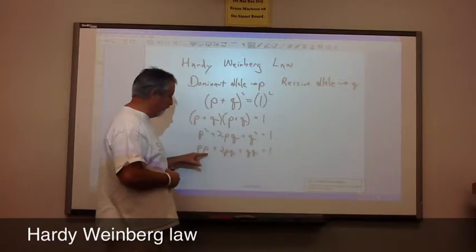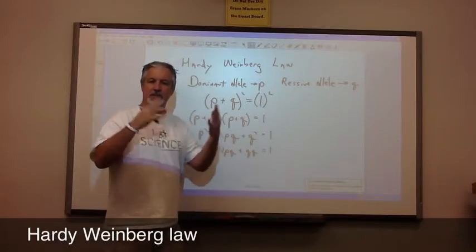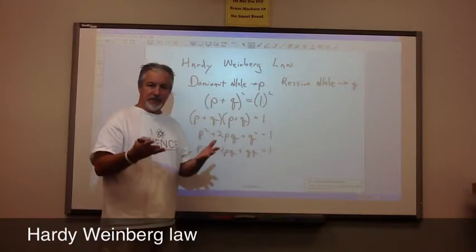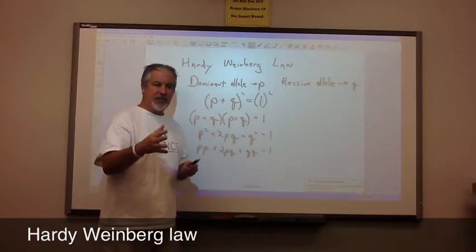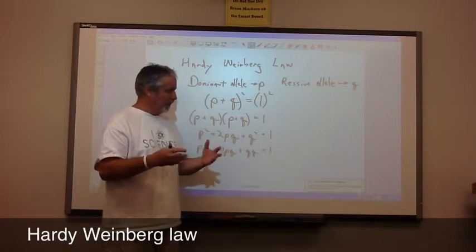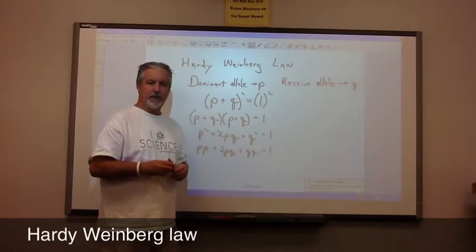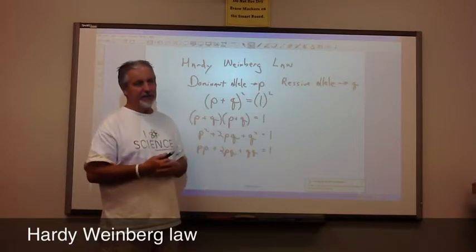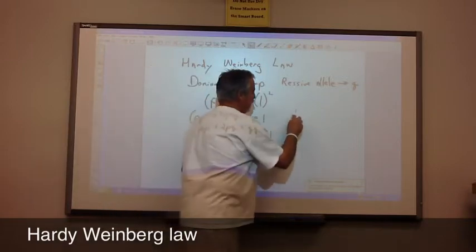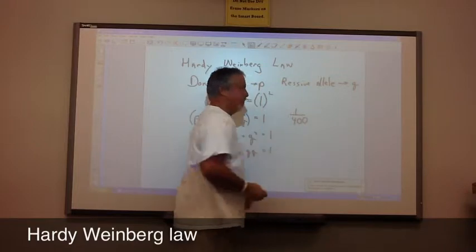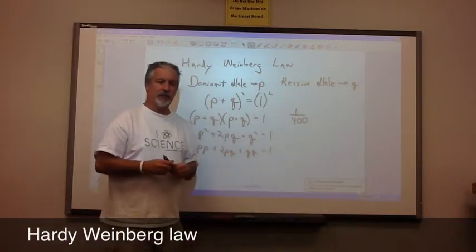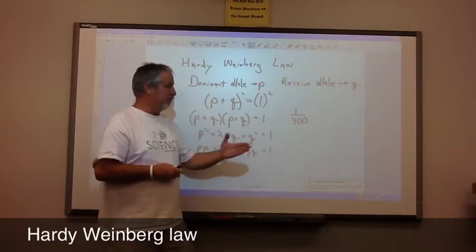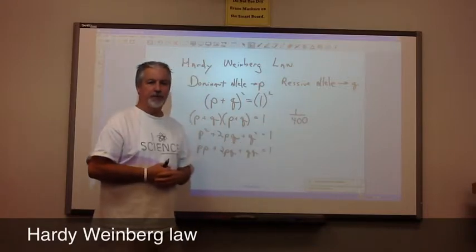Now, I'm going to show you how we use this to make predictions in the general population. So, sickle cell anemia is a genetic disease that's concentrated in the African American community. If you go to hospital records, you can generally see that the amount of sickle cell anemic children that are born into the African American community are 1 in 400.